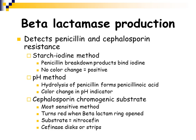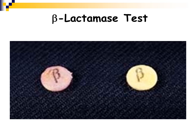When the beta-lactam ring is opened up, the disc turns red. The substrate is nitrocefin and you use cefinase discs or strips. Here's a picture of the cefinase disc — there's a 'B' for beta because it's testing for beta-lactamase. On the left you can see it's bright red, which confirms a beta-lactamase producing organism. On the right it didn't turn red, so that would be negative.